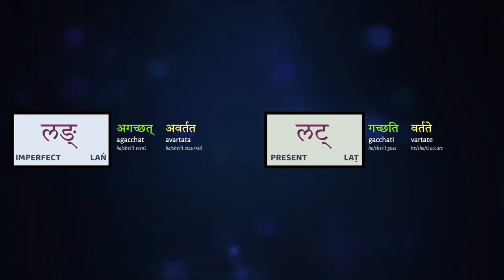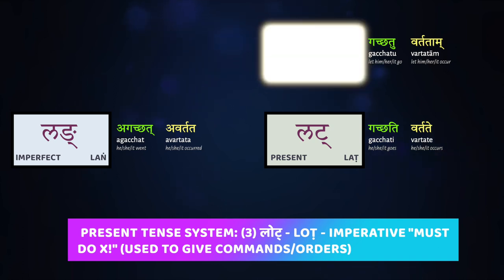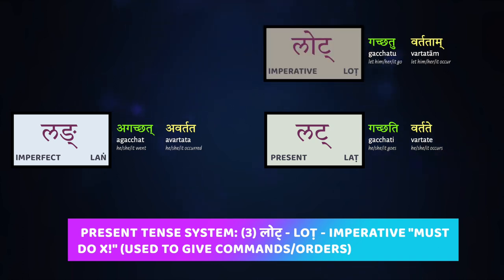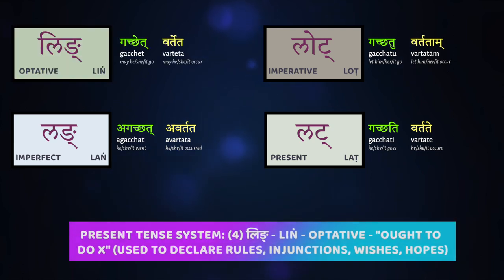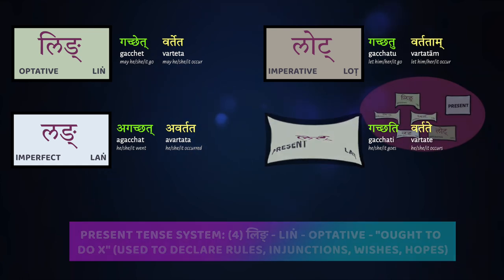Two other tenses are formed off of the present stem. One is the imperative, also known as the lōṭ, and this is what you use to give orders, to bark commands. Then there's the optative, or the liṅ, which is used to give out rules, suggestions, hopes, and wishes. We'll also learn about those two as part of our next series down the road.